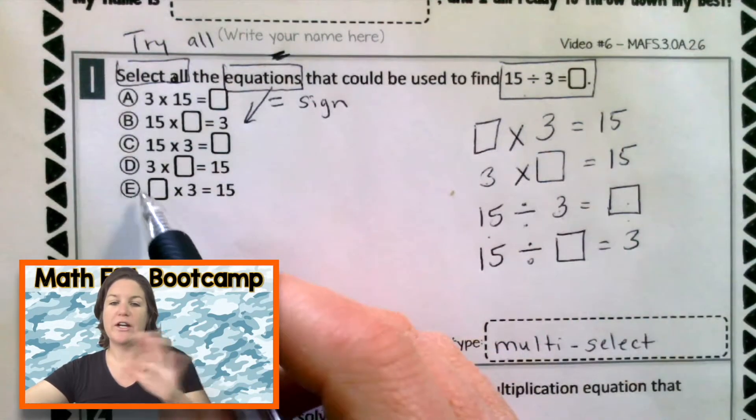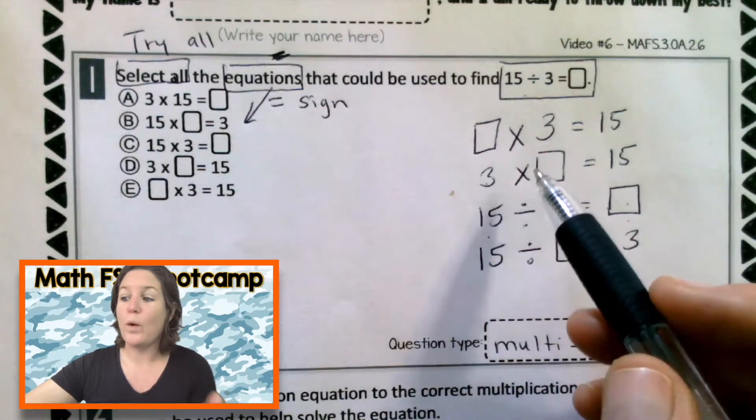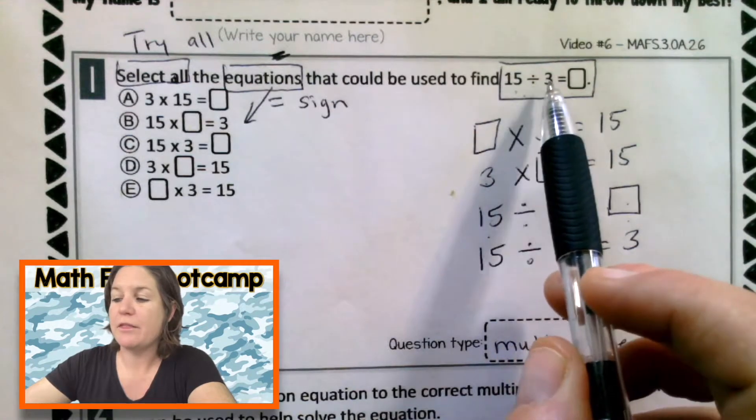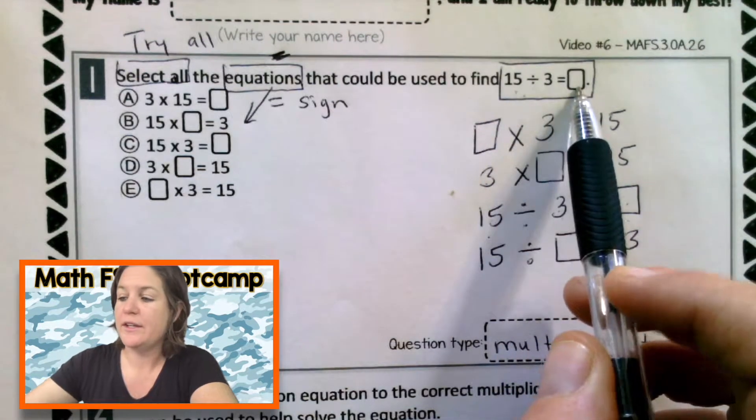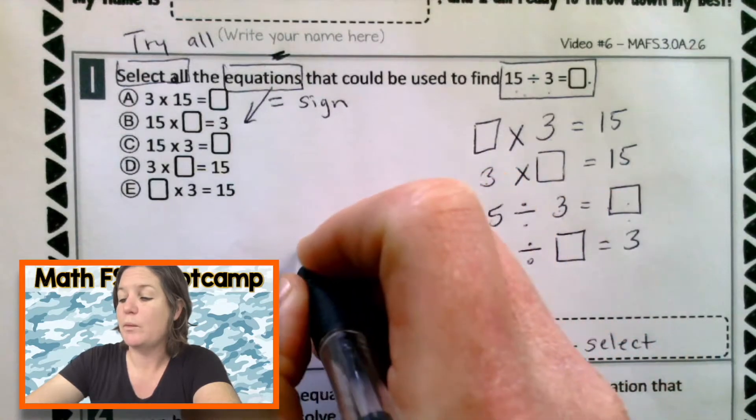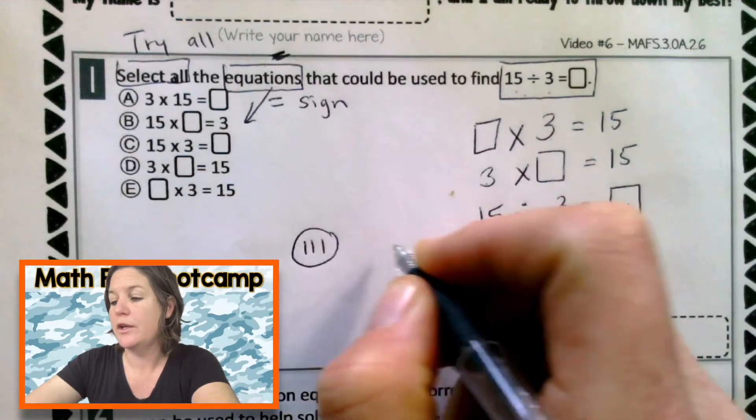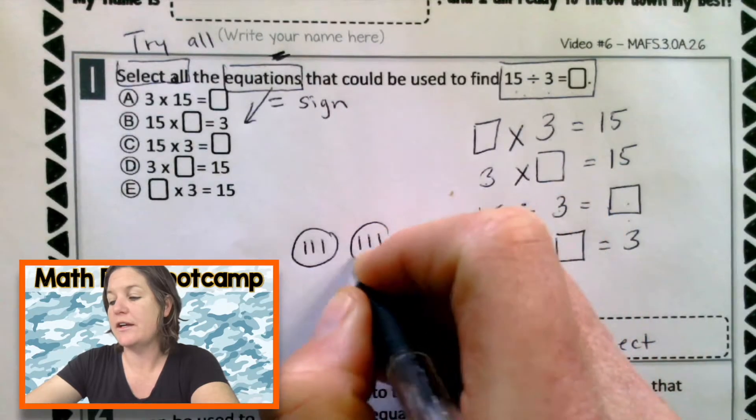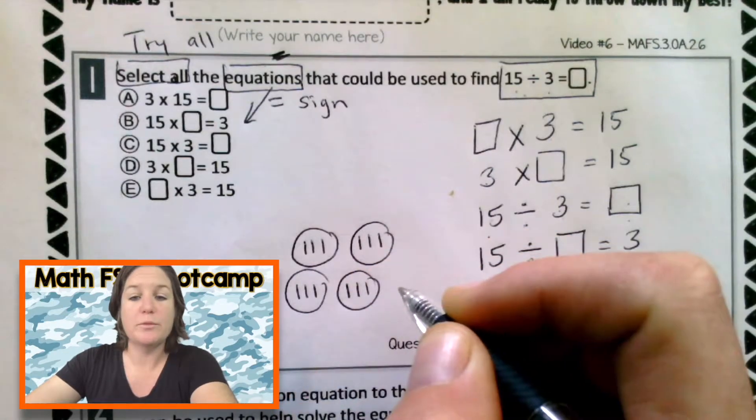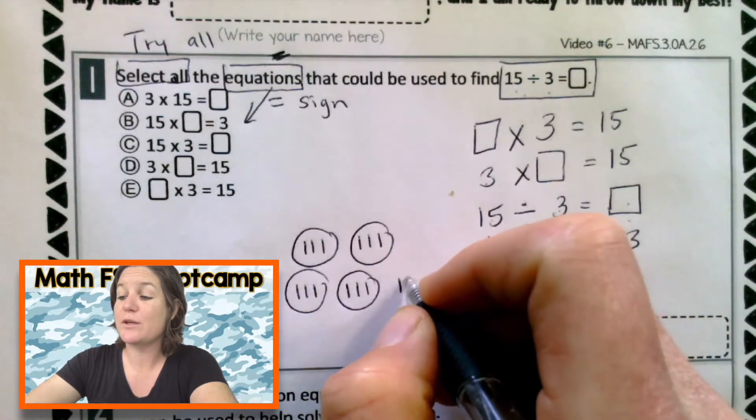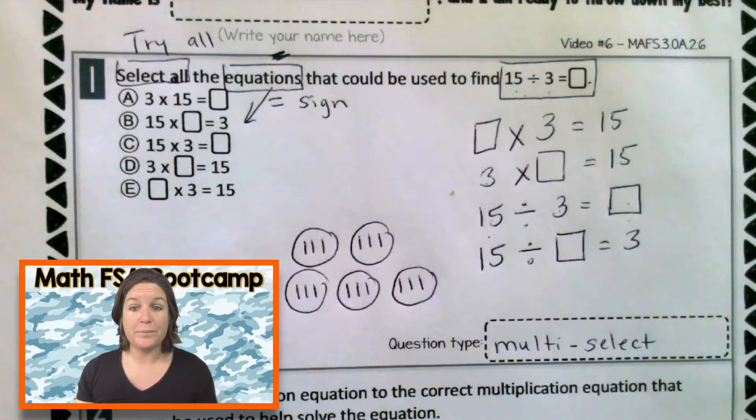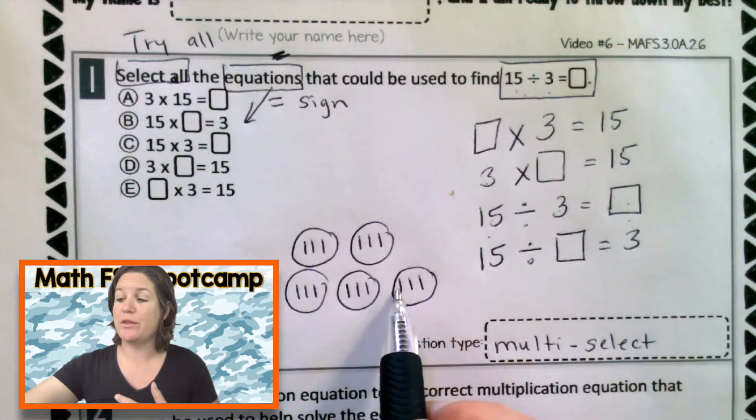Now before we go over here and match it up, let's take it a step further and identify what the missing value is. Let's go back up to the original. 15 divided by 3 equals what? So if I have 15 total and I have 3 things in each group, that would be 1, 2, 3, there's a group. 4, 5, 6, there's a group. 7, 8, 9, there's a group. 10, 11, 12, there's a group. And I'm going all the way to 15. So 13, 14, 15, there's a group. And how many groups do I have? 5, right? I have 5 groups with 3 in it.